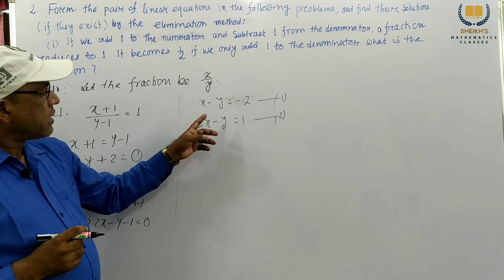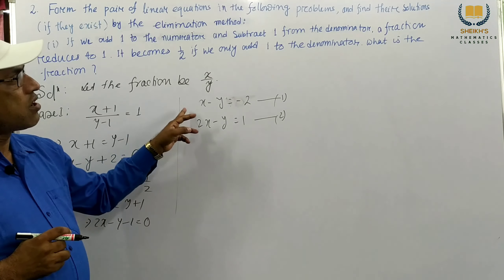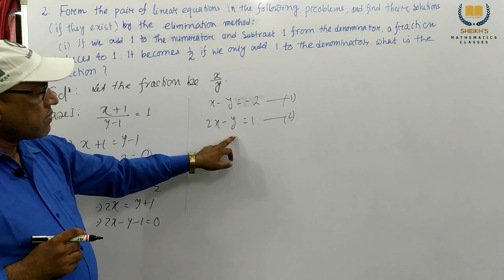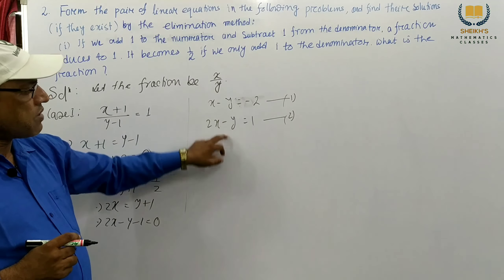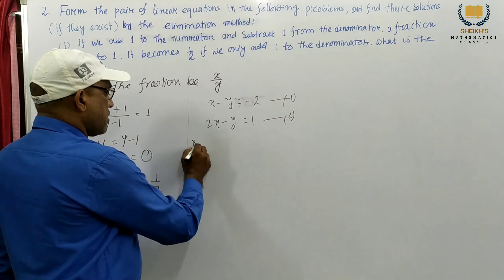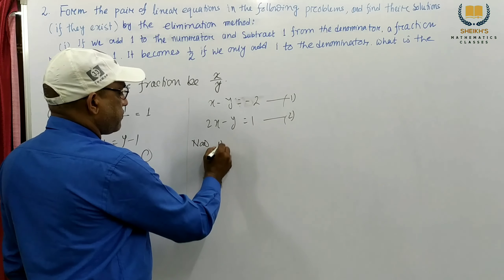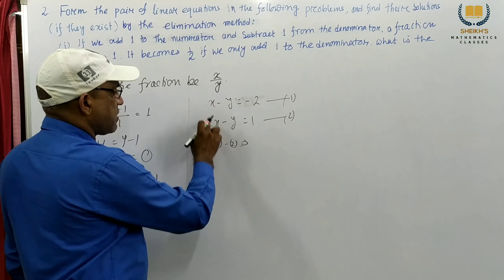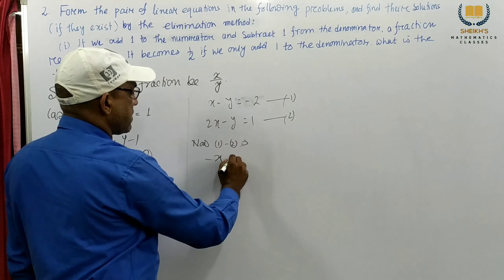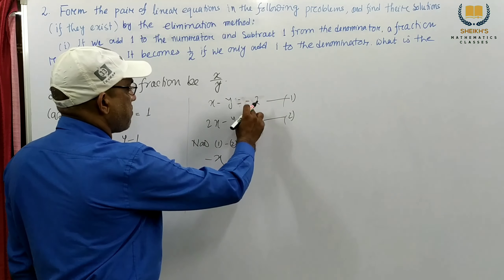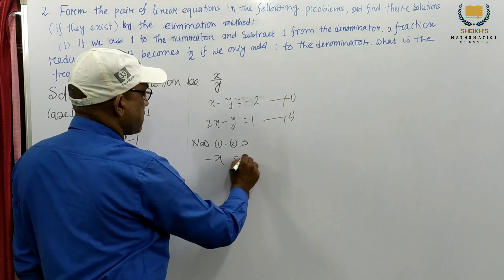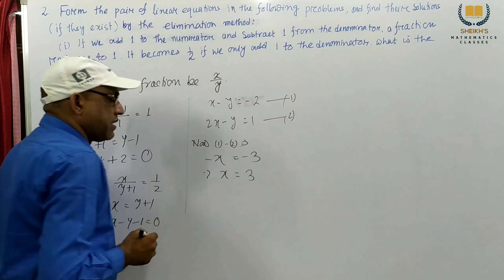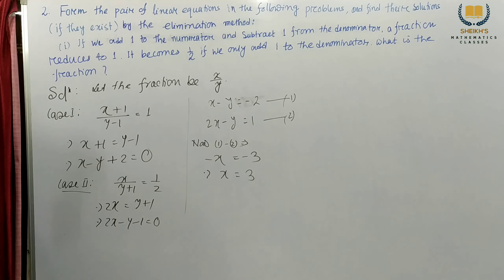We solve this by the elimination method. Rewriting: equation 1 is x minus y equals minus 2, and equation 2 is 2x minus y equals 1. Subtracting equation 1 from equation 2, the y terms cancel. We get x equals 3. The value of x is 3.